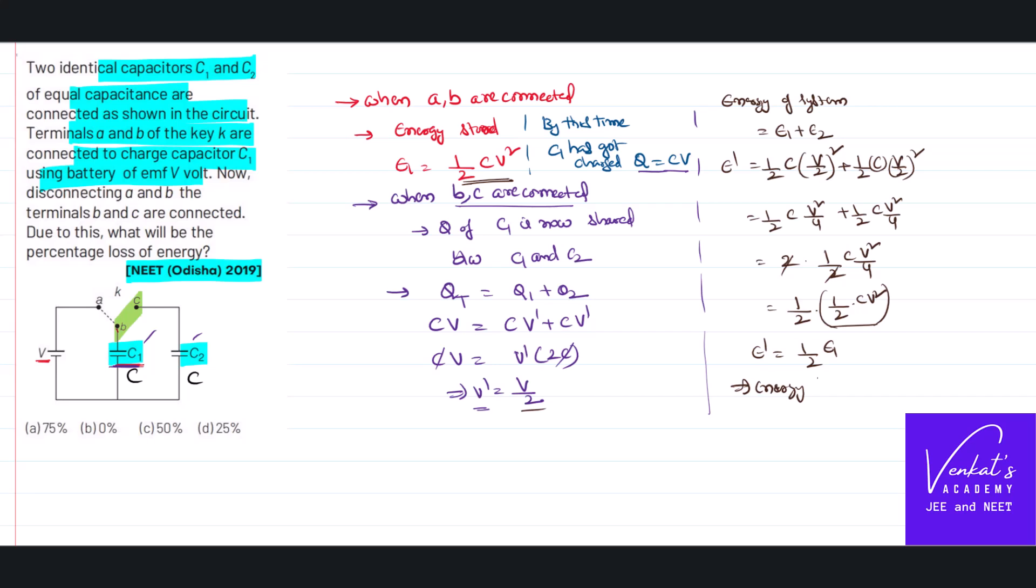Energy lost is half. Earlier E1 is there, now only half E1 is there. That means percentage of energy lost is, as half is only present, half is lost. That half is nothing but 50 percent. So the percentage of energy lost is 50 percent. This is how we have to solve the problem. Thank you for watching.